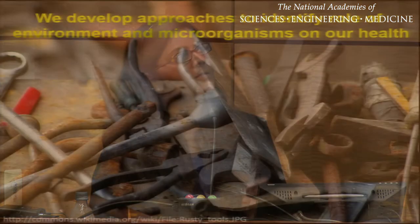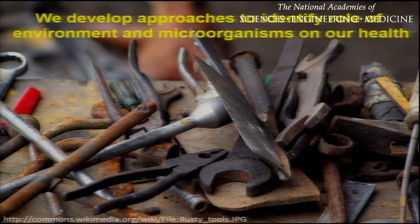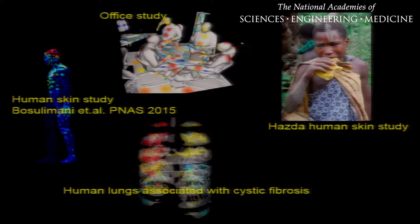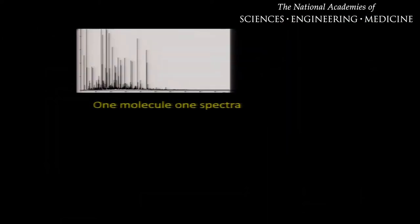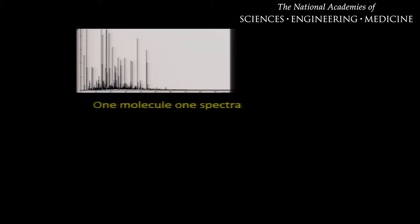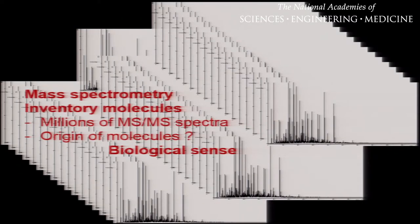In the Dorstein Lab at UC San Diego, we developed tools to respond to these challenges. One of the techniques that we use is mass spectrometry. In mass spectrometry, each molecule generates one spectrum. If you believe that I have millions of molecules on me, I have generated millions of spectra. How do you begin to mine such big data and derive biological context from it?